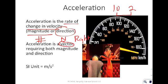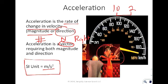Because acceleration is a vector, we have to include both magnitude and direction when we report it. The SI unit for acceleration is meters per second squared. Anytime you see something in meters per second squared, like gravity, it's an acceleration.